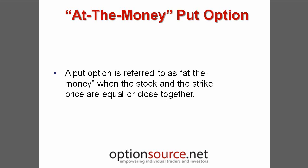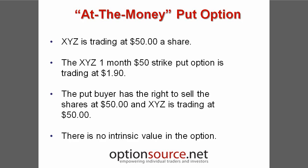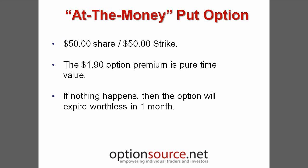A put option is referred to as being at-the-money when the price of the underlying and the strike price of the option is equal or close in value. With XYZ trading at $50 per share, a one-month $50 strike put option may be trading at $1.90. In this example, the put buyer has the right to sell the underlying share at $50. However, since the share value is equal to the strike price of the put, there is no intrinsic value. The $1.90 price of the option is made up entirely of time premium, which means that if the share value does not drop below the strike price of the put, the option will expire worthless.